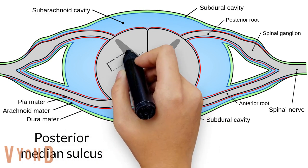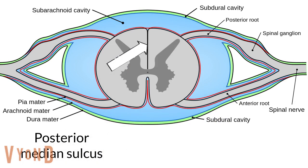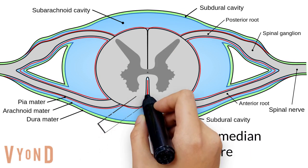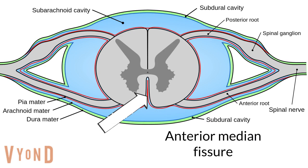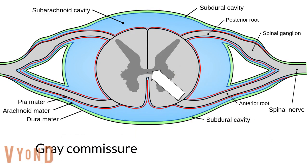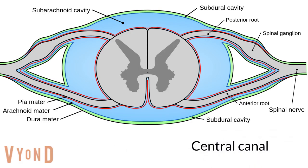Other structures include grooves called the posterior median sulcus and anterior median fissure. The gray commissure is a gray matter bridge that unites both the right and left sides of the spinal cord. The central canal contains cerebrospinal fluid.